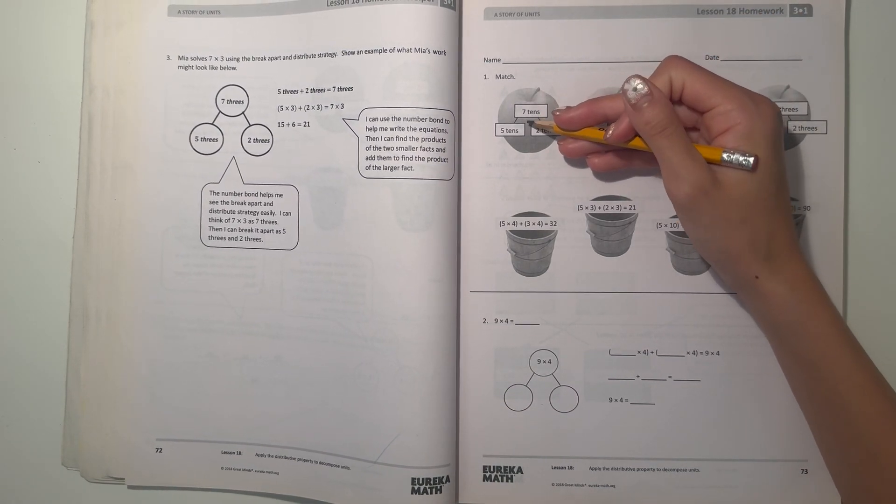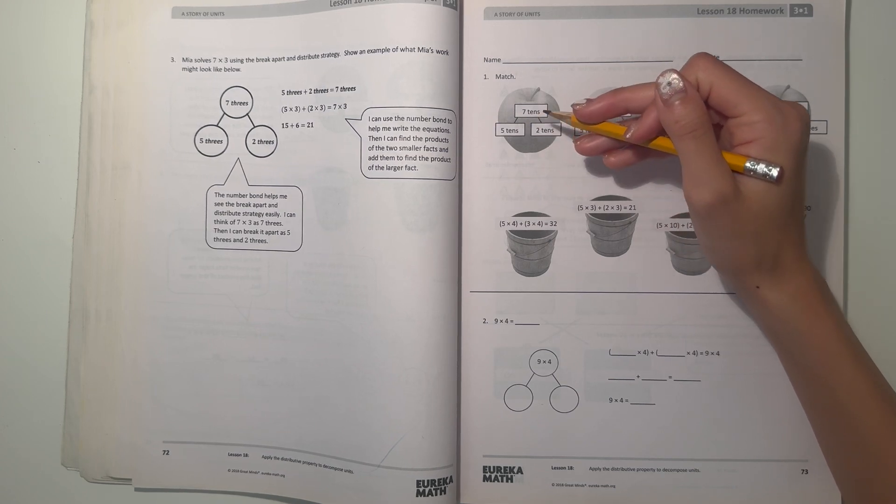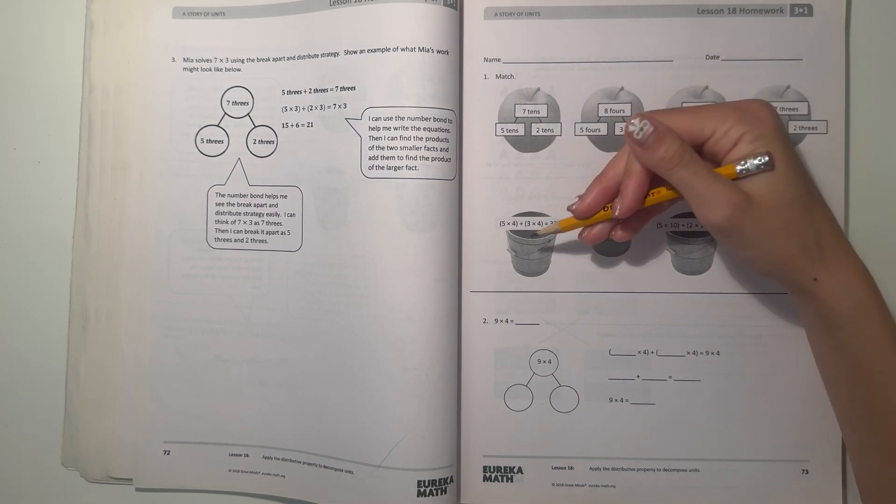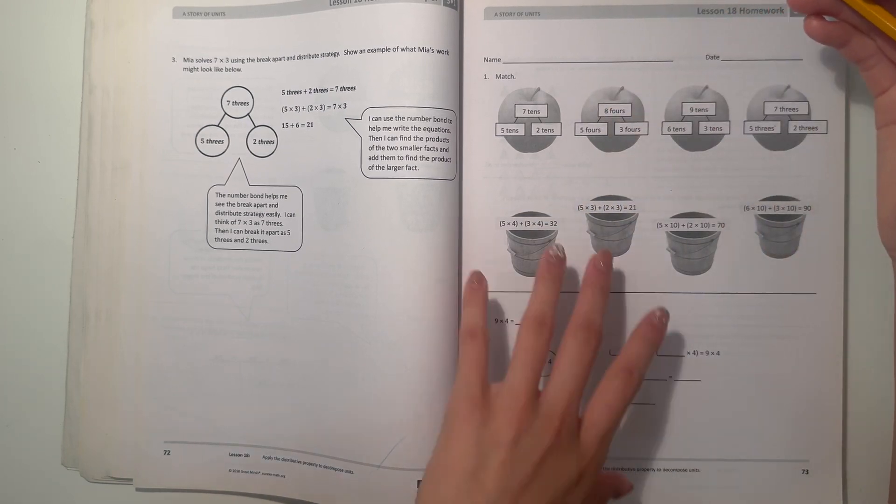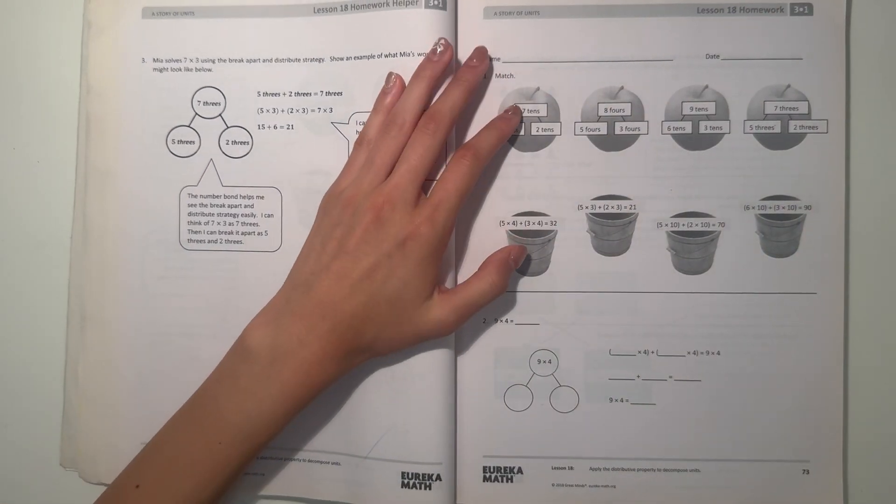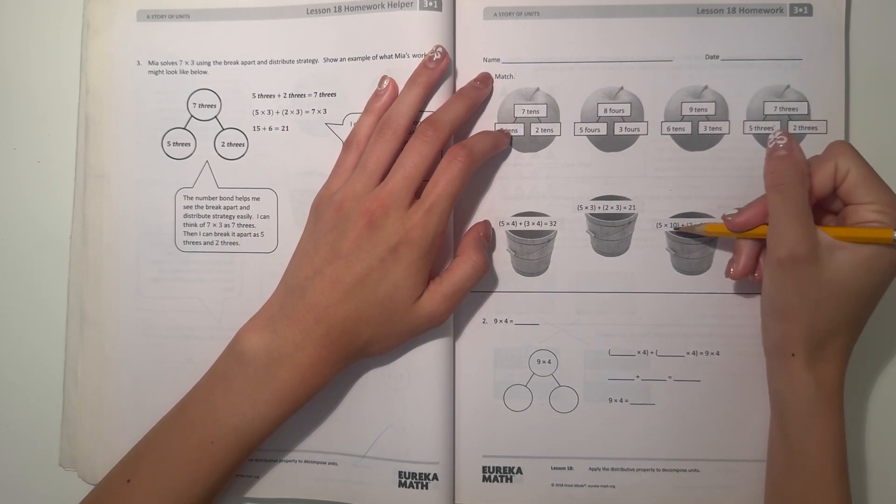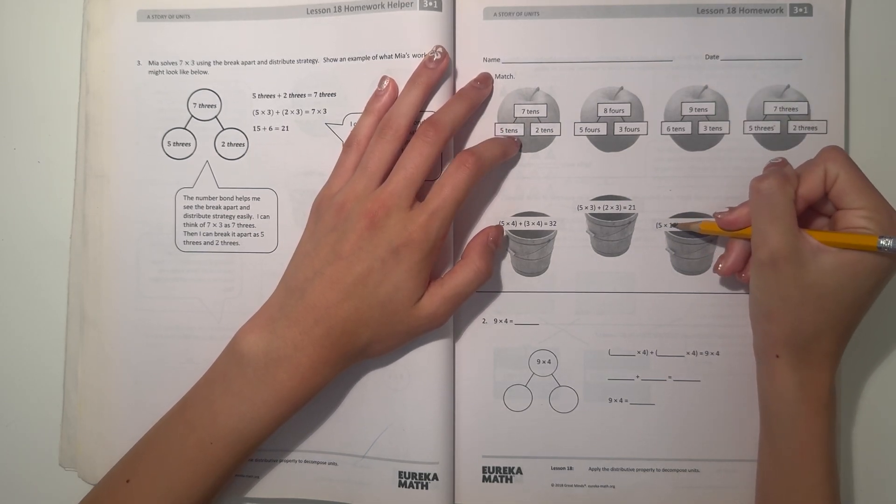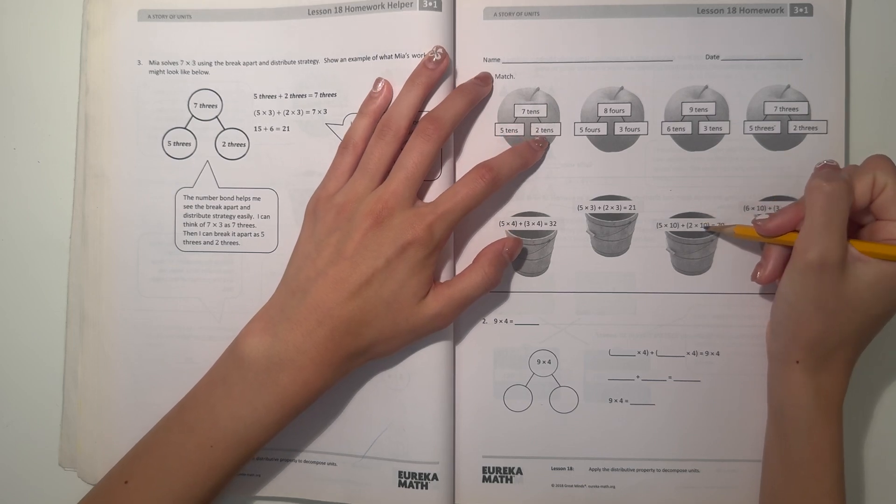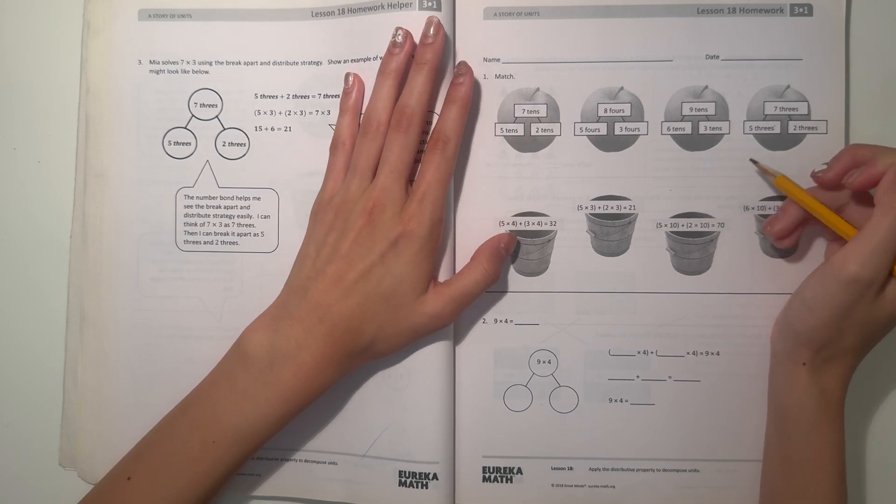saying seven tens break apart into five tens and two tens. So now I have to look for an equation that can match this number bond. Let's see, seven tens, so I have five tens and two tens. This one is five times ten plus two tens, two times ten, equals seventy which is seven tens. So